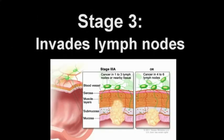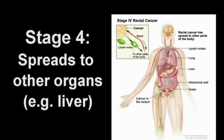In stage 3 rectal cancer, the cancer has spread to nearby lymph nodes, tiny bean-shaped glands of the lymphatic system. In stage 4 cancer, the cancer has spread to other organs such as the liver.